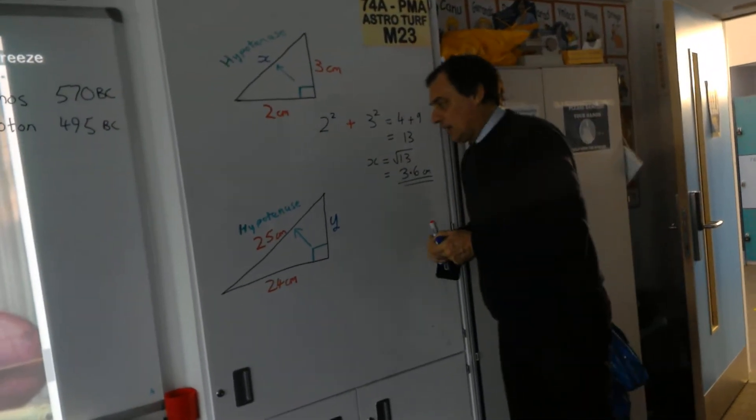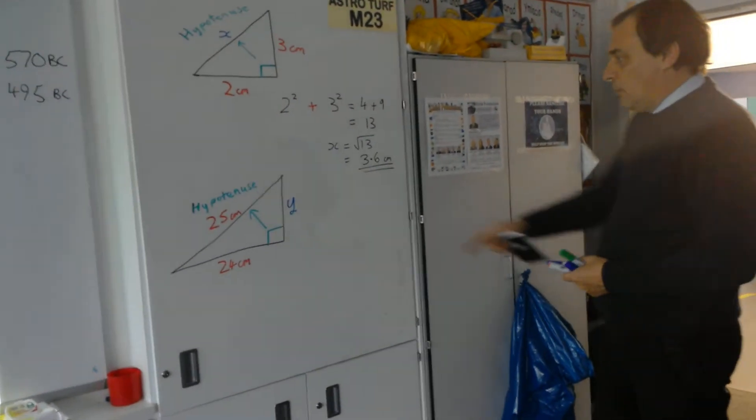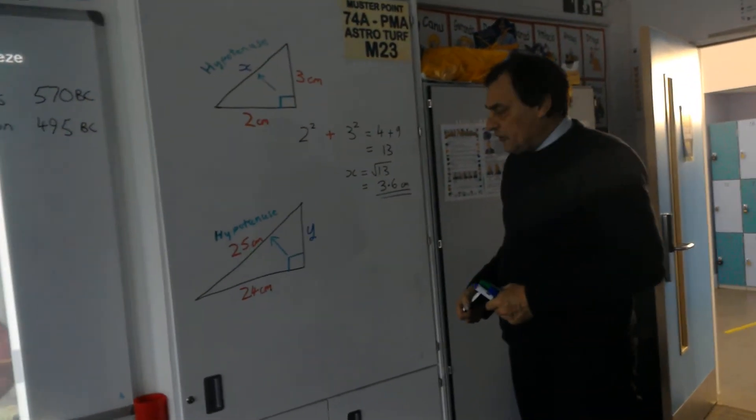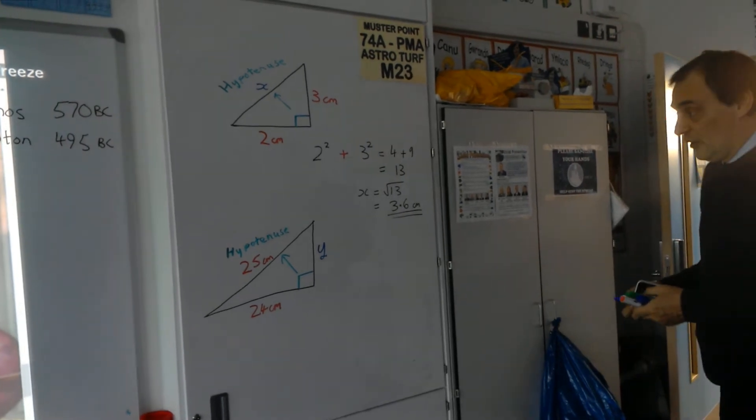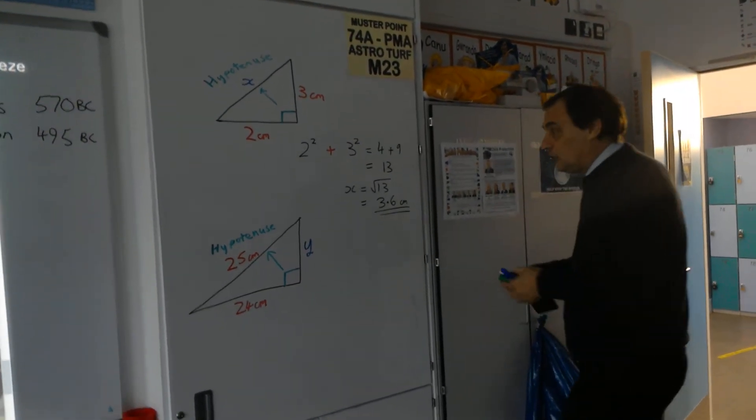Now, supposing I've got the reverse happening here, supposing I've got the hypotenuse already, it's 25 centimetres, and I want to find this side y. Now if you notice, it's one of the shorter sides. So I'd do exactly the same thing, except for one vital change.